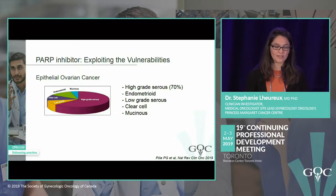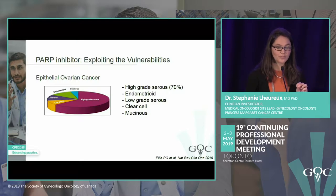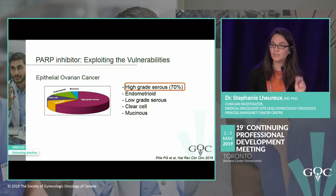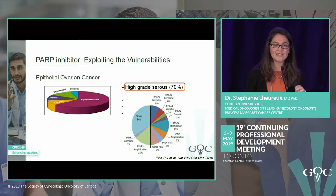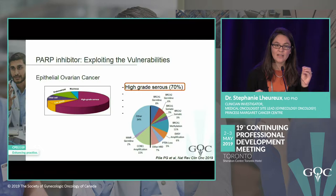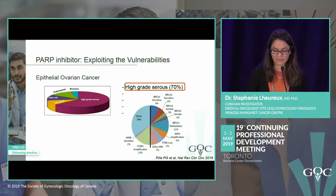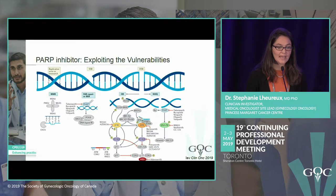PARP inhibitors are a new treatment that make a big difference in patient care. The principle is exploiting the vulnerability of ovarian cancer — specifically high-grade serous ovarian cancer. This cancer has DNA repair damage, and with its high rate of proliferation, half of patients have what we call a BRCA-like tumor with a defect in the DNA repair pathway.